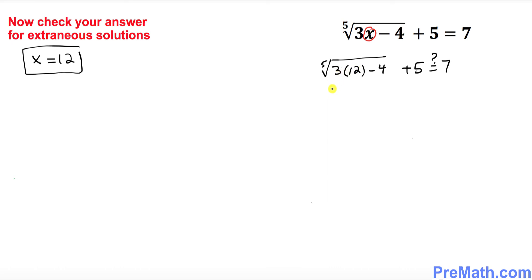Now inside this radical, 3 times 12 is 36 minus 4. So the fifth root of 36 minus 4, plus 5, is it equal to 7? That's going to give you the fifth root of 32 plus 5. Question mark, is it equal to 7? Now this is simply the fifth root of 32, which is 2, plus 5. Is it equal to 7?